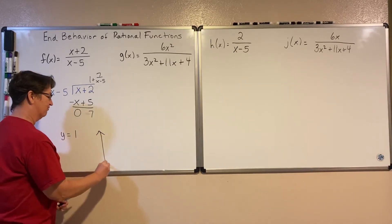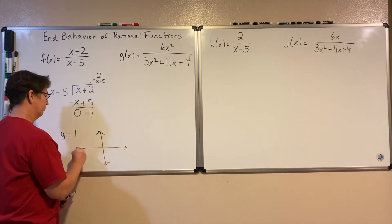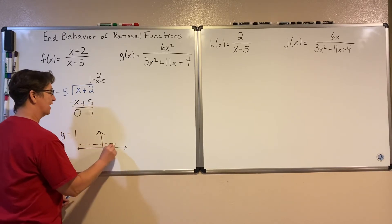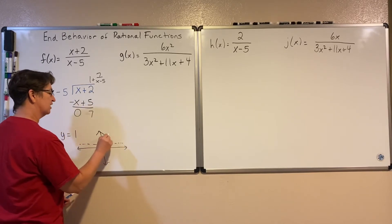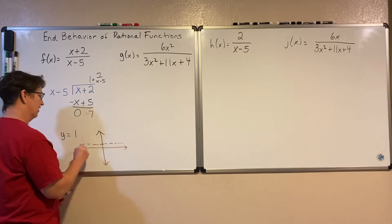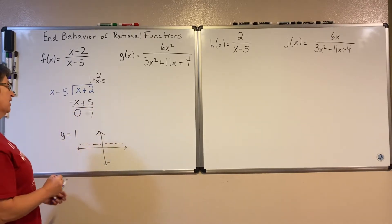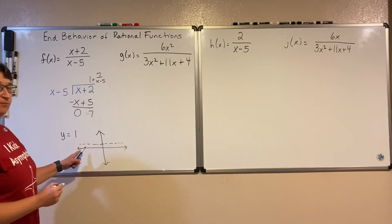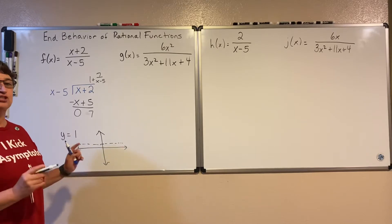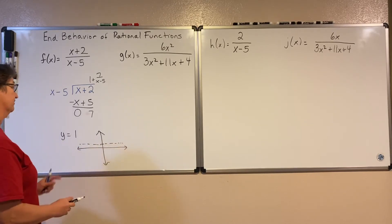In other words, there's going to be a horizontal asymptote where y equals 1. So if I look at a graph of that on a coordinate plane where y equals 1, my graph is going to get closer and closer to that on the ends, at the end behavior. It doesn't really tell me what's happening in the middle — it just talks about what's happening on the end.